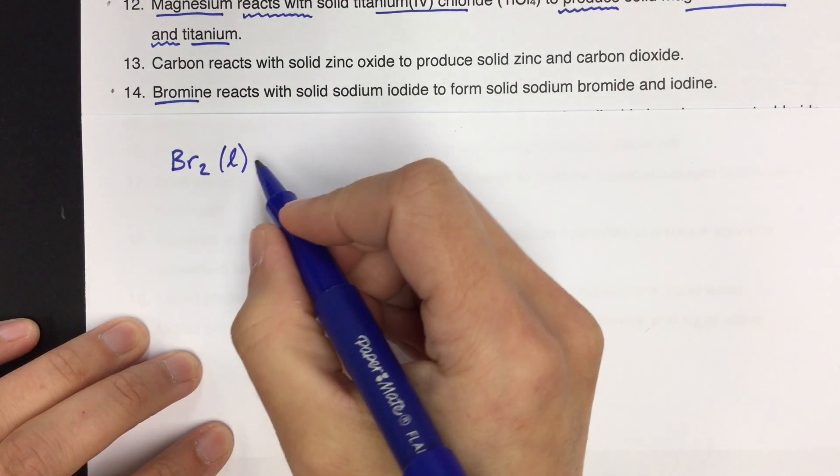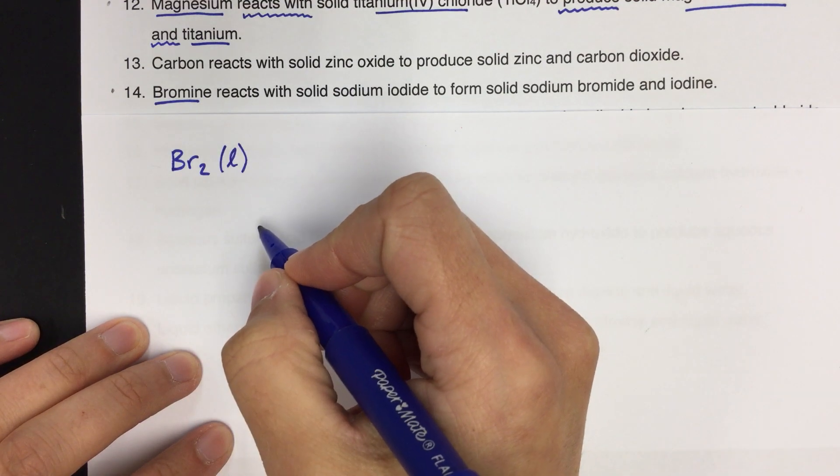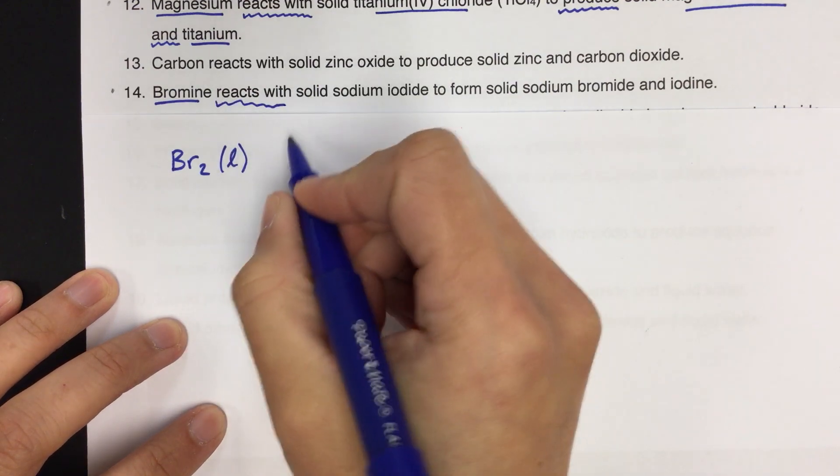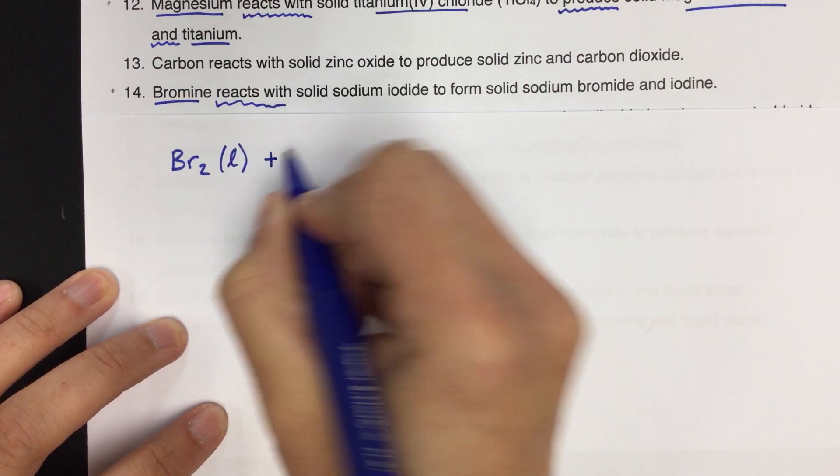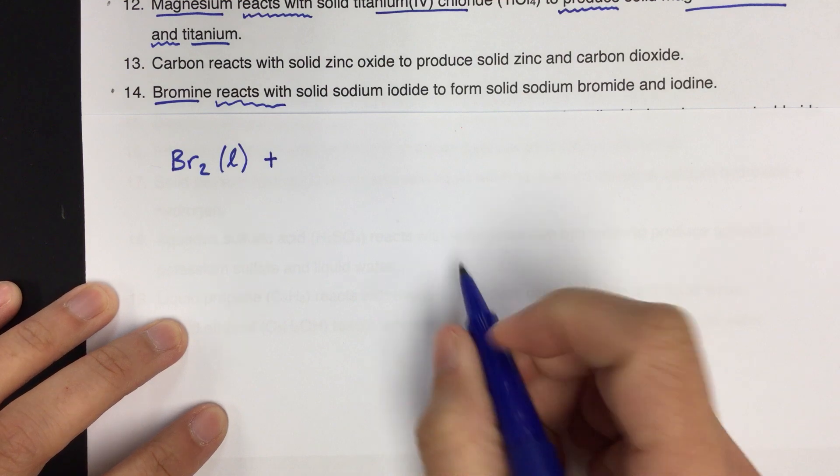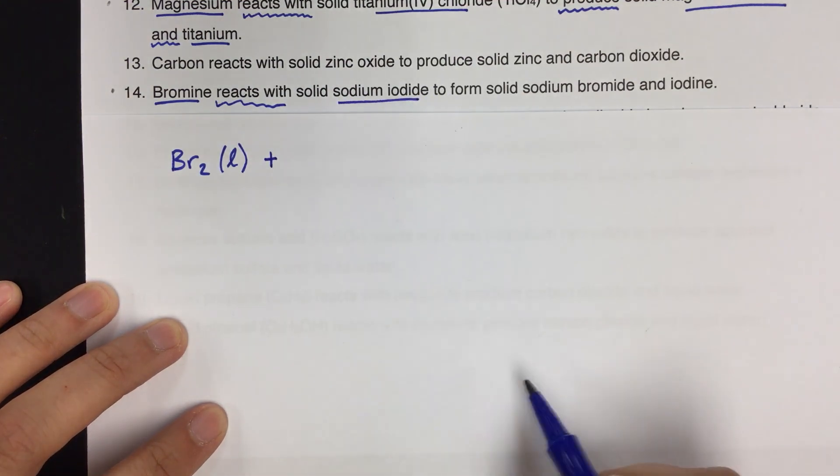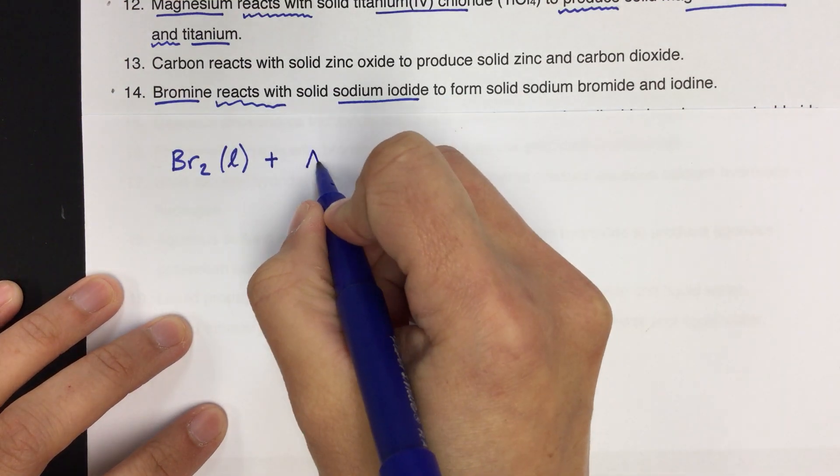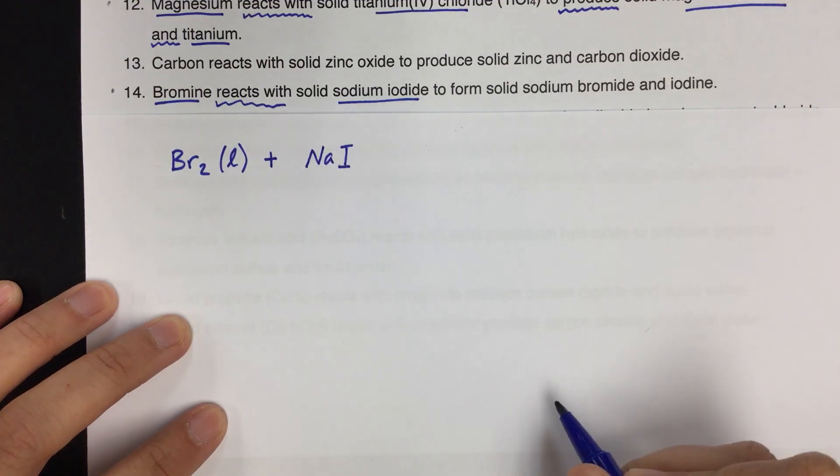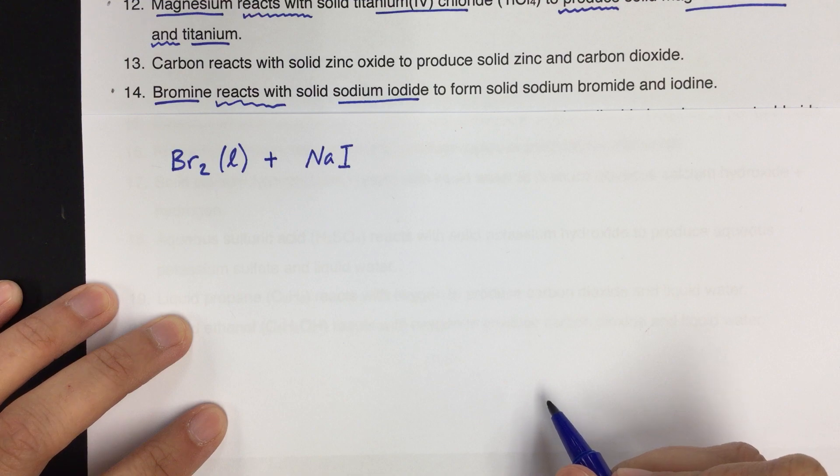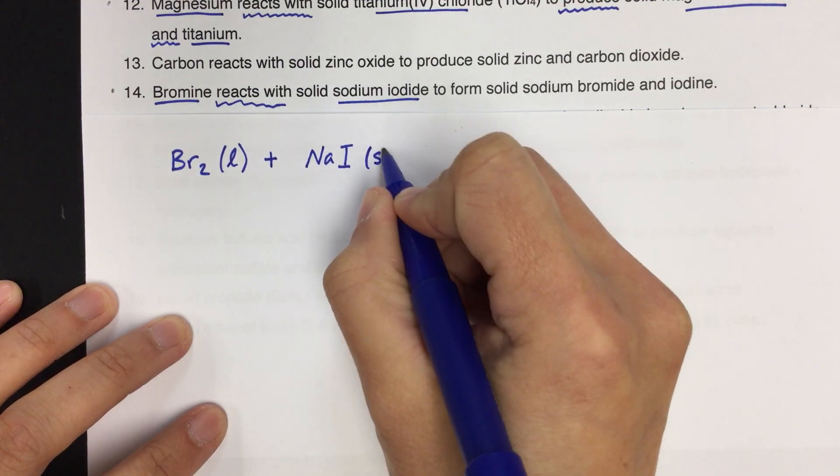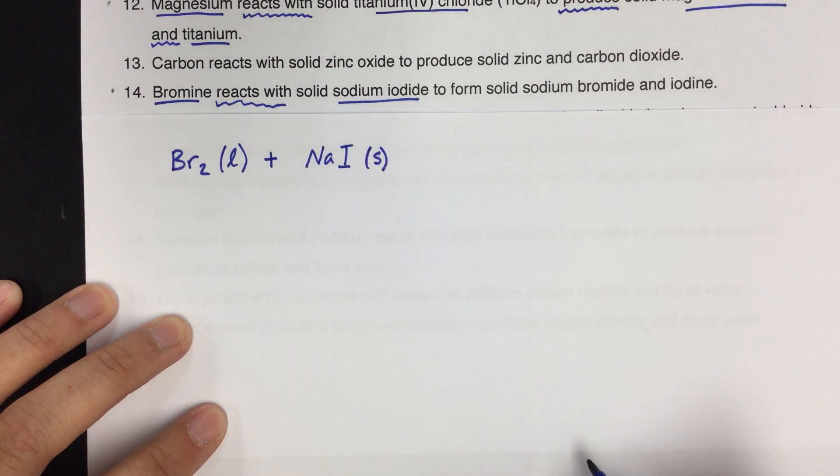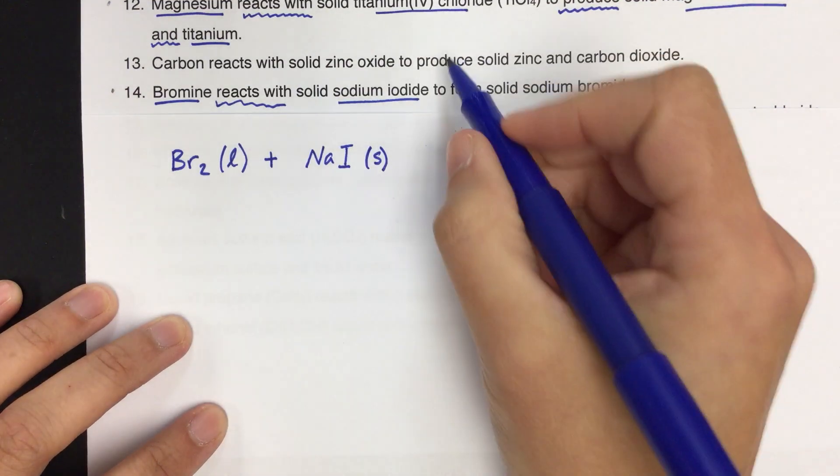I use a cursive L just to differentiate between the number 1. So bromine reacts with, so that's going to be a plus sign, solid sodium iodide. So this is going to be another reactant. So sodium is plus 1, iodide is minus 1. So it's going to be NaI is the formula. And then it tells us it's solid.